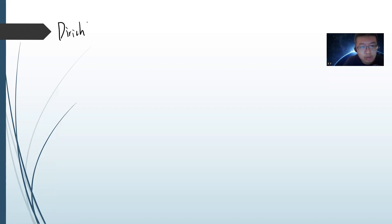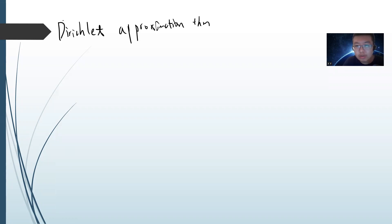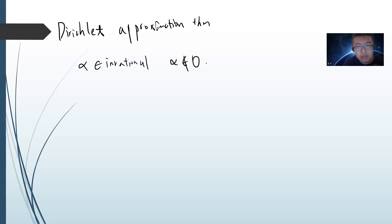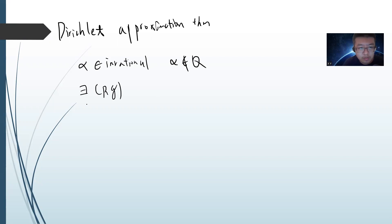This is tightly related to the Dirichlet approximation theorem. Let me just quickly recall — if you haven't seen this, you can check out my other videos where I give the proof. Basically the idea is that if alpha is irrational, the Dirichlet approximation theorem tells you that you can find infinitely many p/q such that |α - p/q| < 1/q².